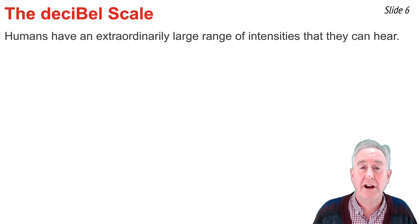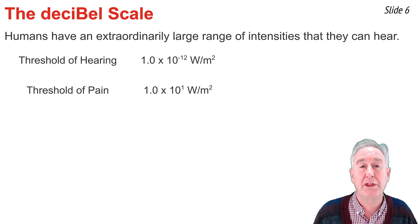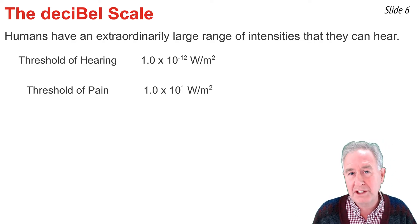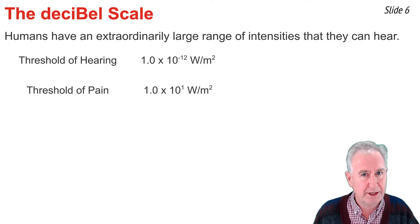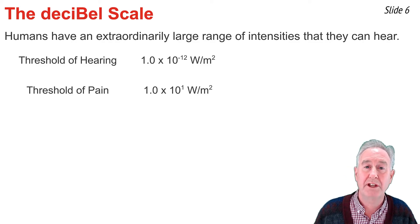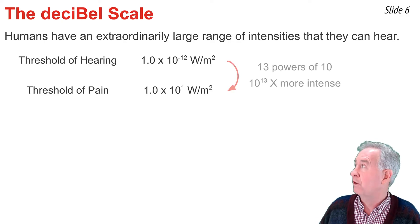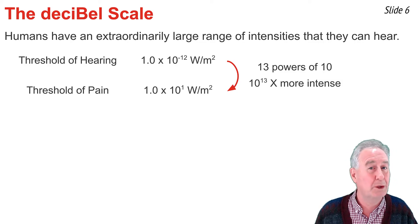Humans have an extraordinarily large range of intensities that they can hear. The so-called threshold of hearing has an intensity of 1×10⁻¹² watts per meter squared. If we increase that intensity by 13 powers of 10 — that is, by 10 trillion — we reach the threshold of pain, which has an intensity of 1×10¹ watts per meter squared. This is a large range, with the higher intensity being 10¹³ times more intense than the lower.